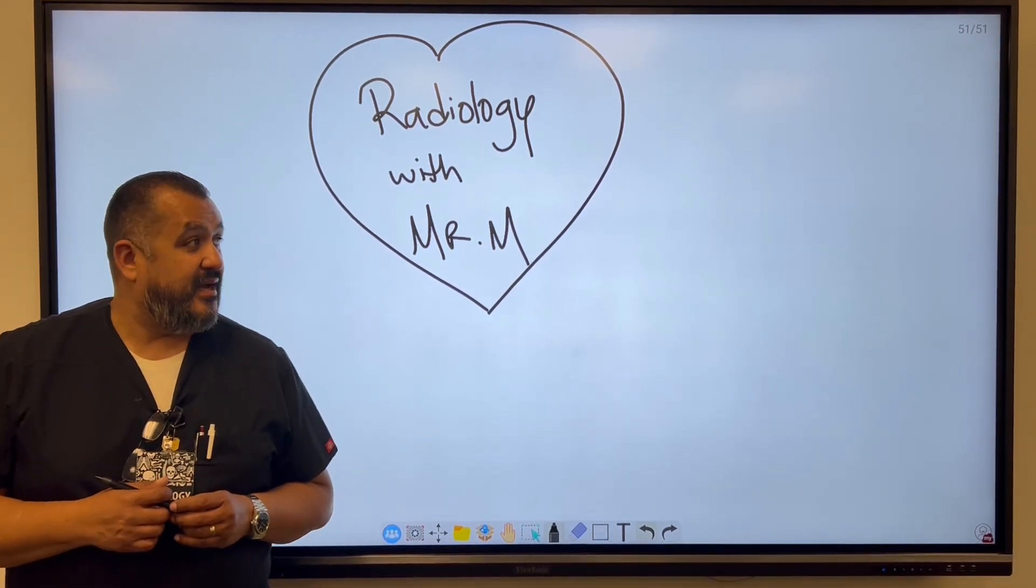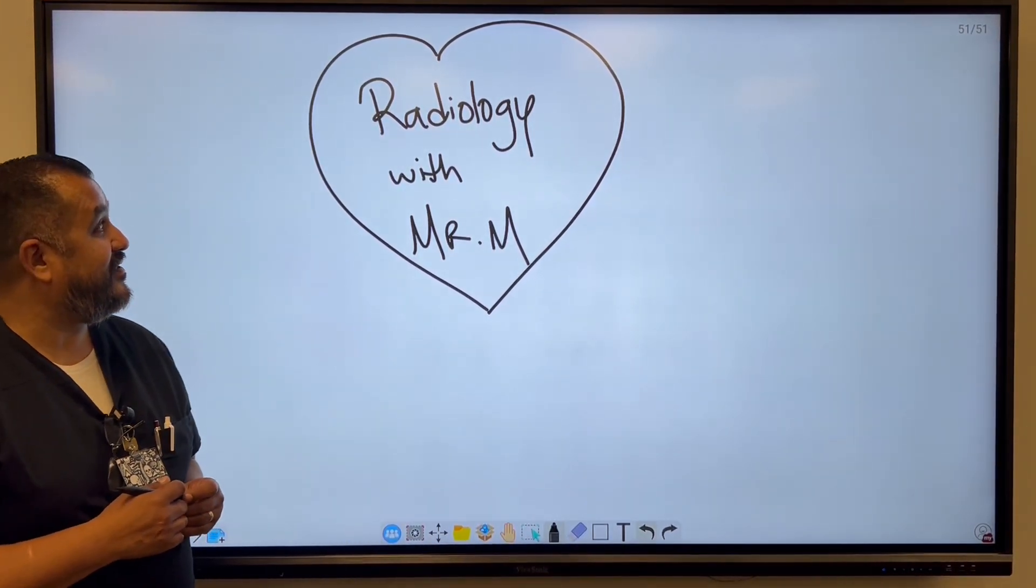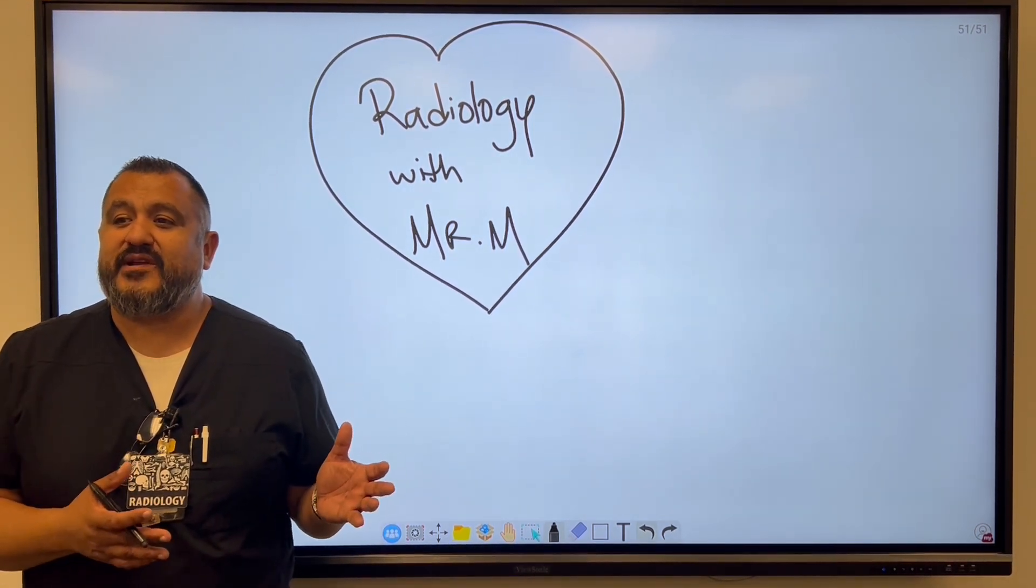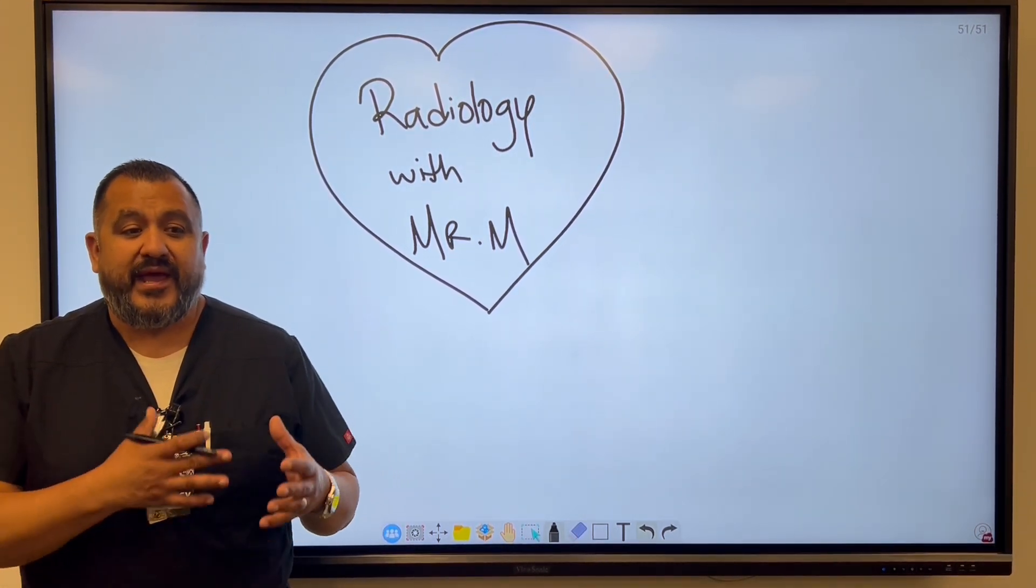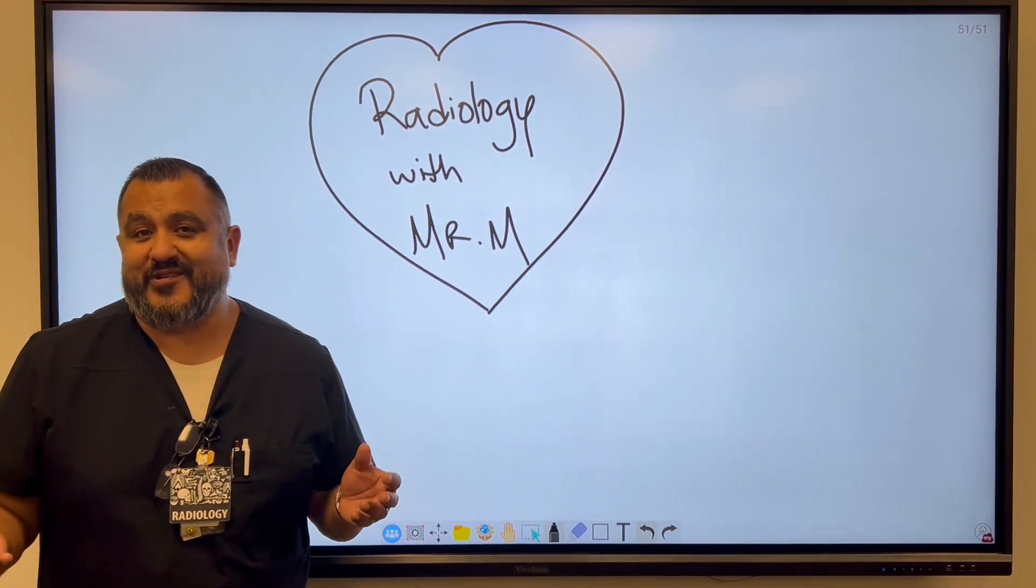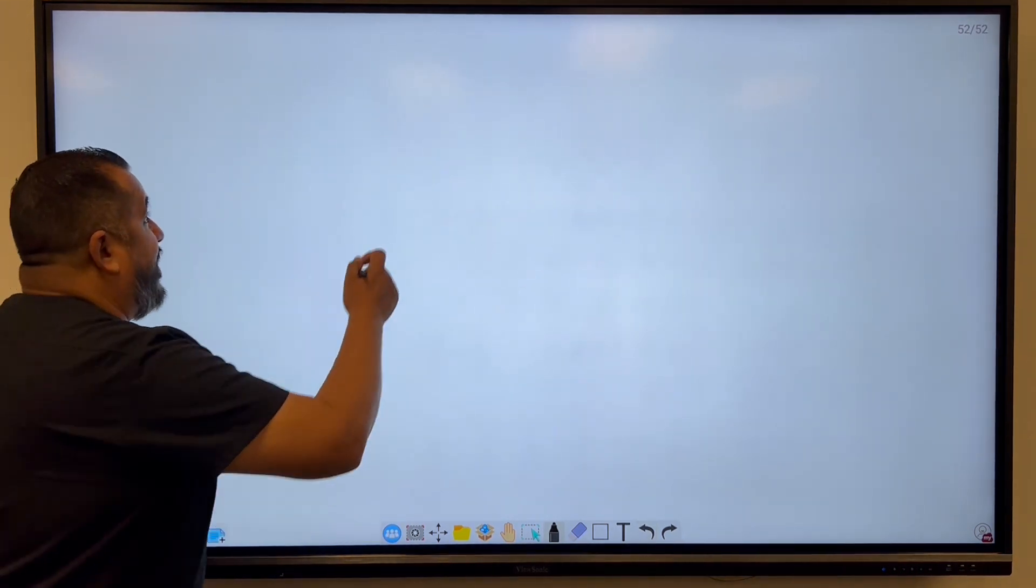All right, Mr. Medellin here, Mr. M. We're going to be covering the valence formula. This is going to be a quick video on how to determine how many electrons can be held within the orbit, the valence, or the shell of energy. We're going to be doing the valence formula.